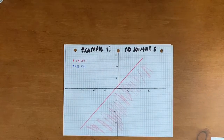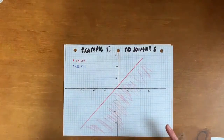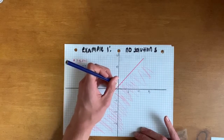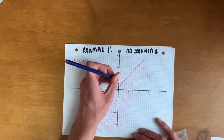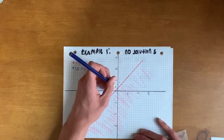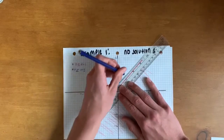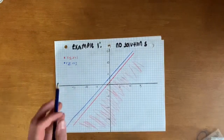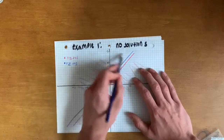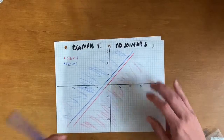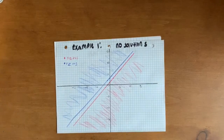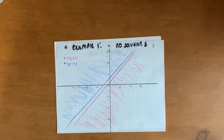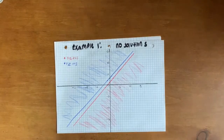For our second line, y is greater than or equal to x + 3, so we start at 3 and use the same slope — up 1 over 1, down 1 over 1. Because this line is greater than, we shade everything above this line. You can see there is some space in between the lines — if the lines do not intersect, there are no solutions. So there are no solutions to this particular system of inequalities.